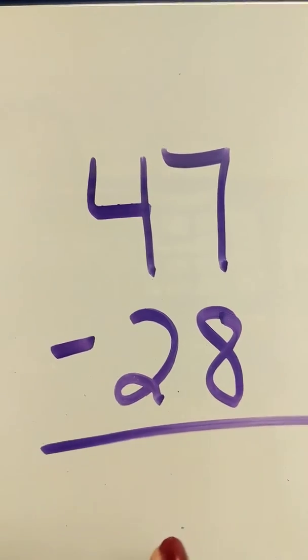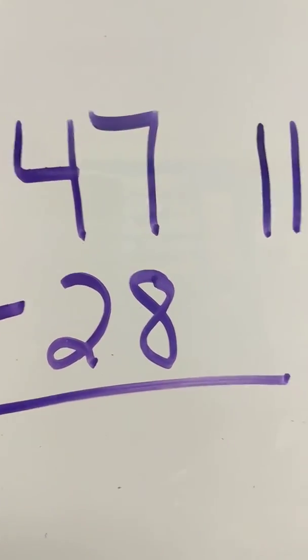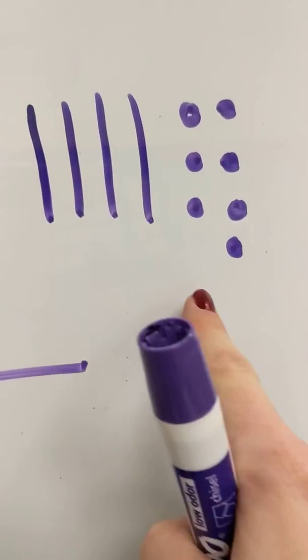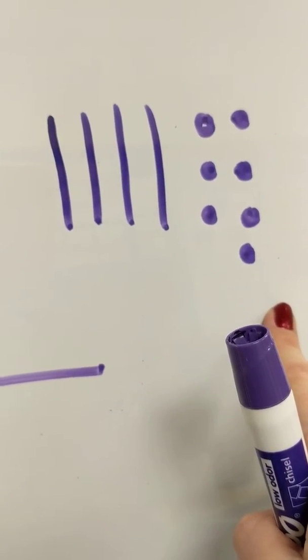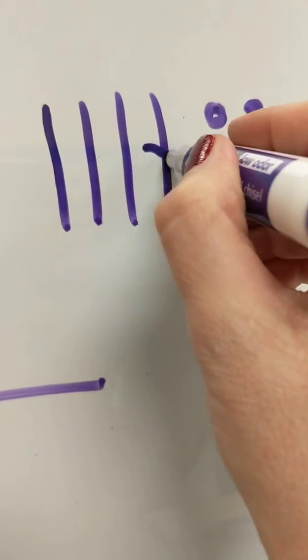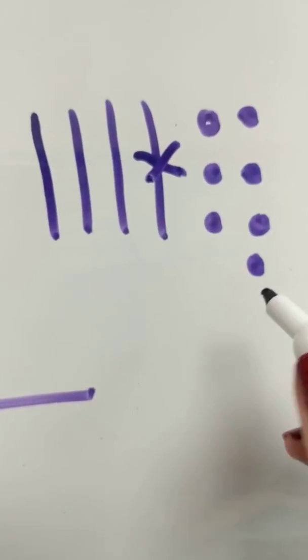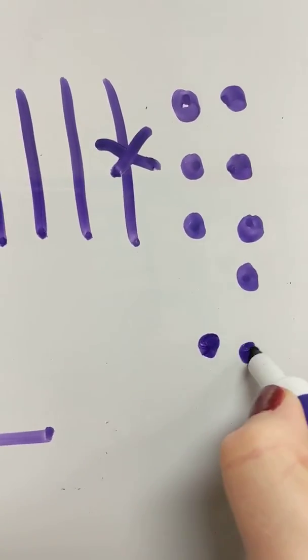So we're going to do 47. So now we're going to want to take away 28. But I can't take away eight ones because I only have seven ones.